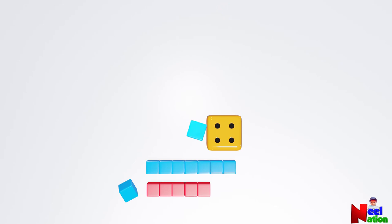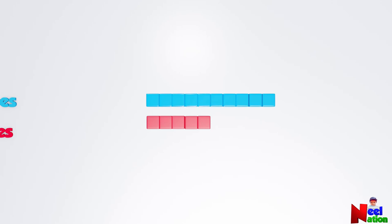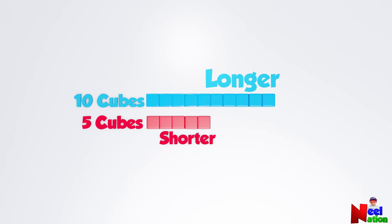Which one is longer and which one is shorter? Blue is longer. Now you can say that the row of blue cubes is longer than the row of red cubes.